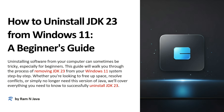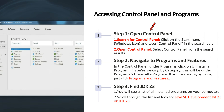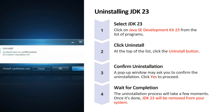This video tutorial explains how to uninstall JDK23 from Windows 11. First, open the Control Panel then navigate to Programs and Features — there you will see JDK23. Select JDK23, click on the Uninstall button, and a confirmation window will pop up. Click Yes to proceed, then wait for the uninstallation to complete.